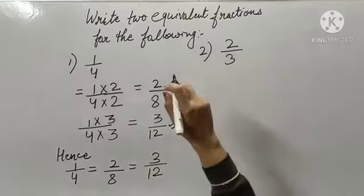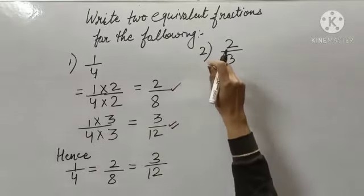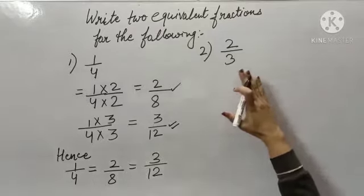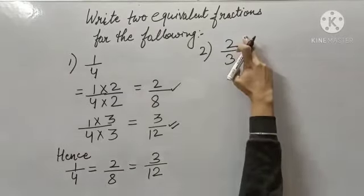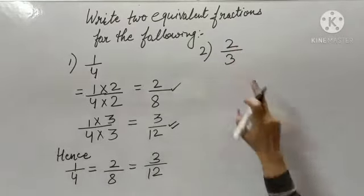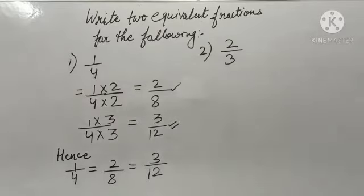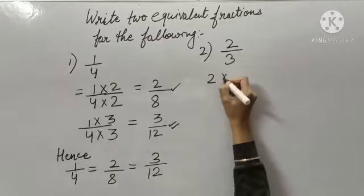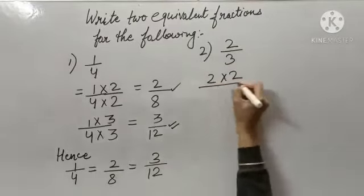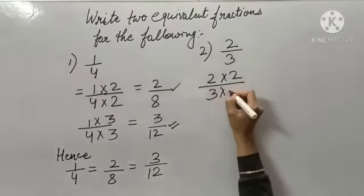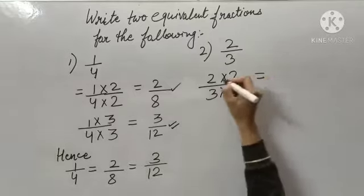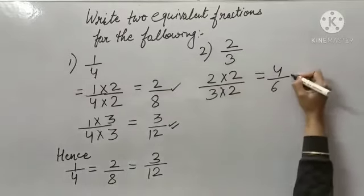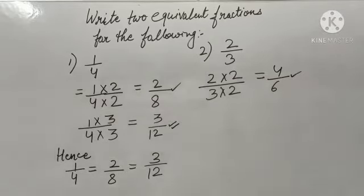Again I need to find the equivalent fraction for 2 upon 3. So what I will be doing? I will be multiplying my numerator as well as my denominator with any number of my own choice. Here I am multiplying my numerator with 2 and my denominator also with 2. So 2 times 2 are 4, and 3 times 2 are 6. So this is my first equivalent fraction.